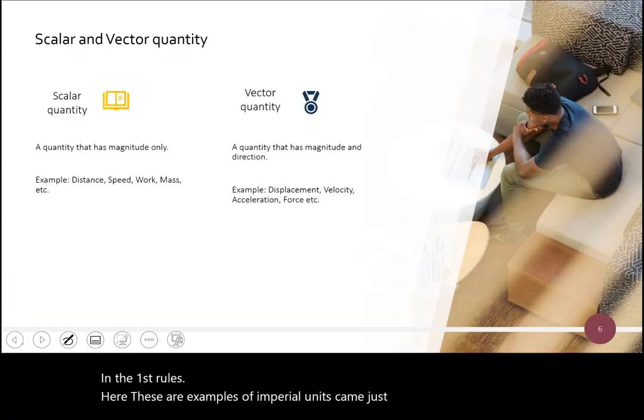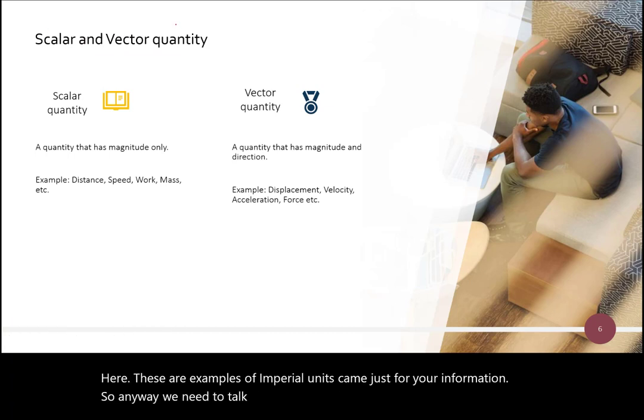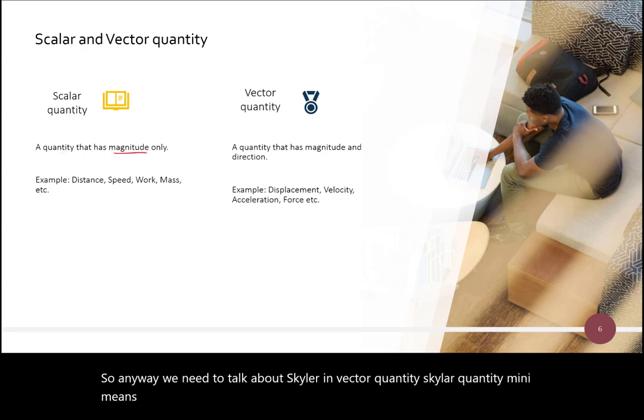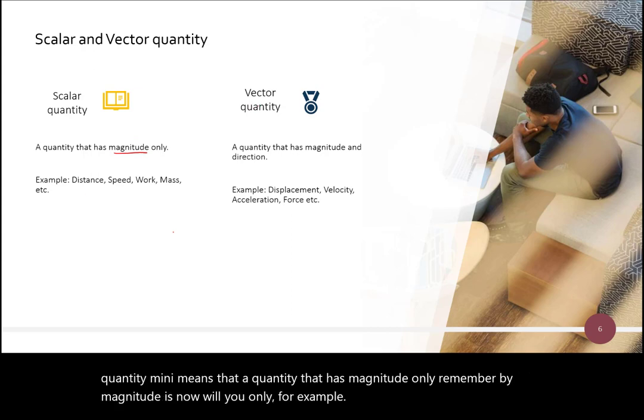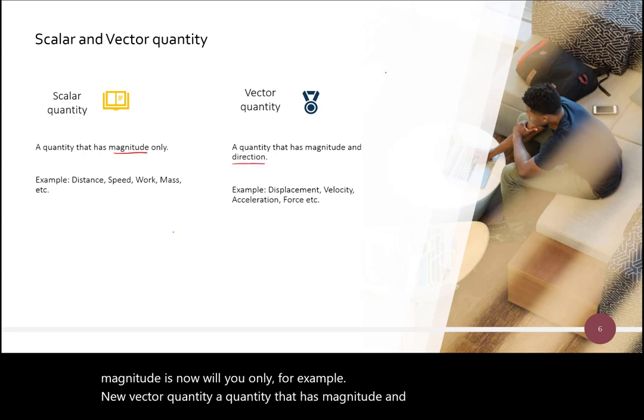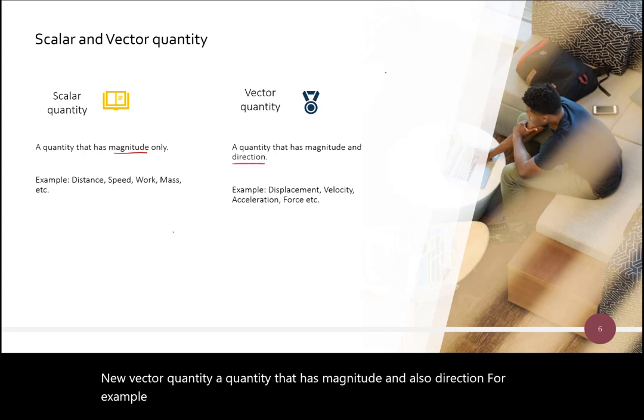Alright. So, and then we need to talk about scalar and vector quantity. Scalar quantity means that a quantity that has magnitude only. Remember about magnitude just now? Value only, for example. Okay, in a vector quantity, a quantity that has magnitude and also direction. For example, displacement, velocity, acceleration, force, and etc.